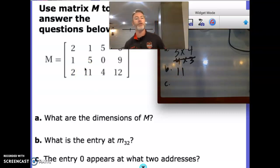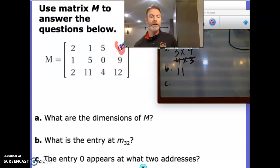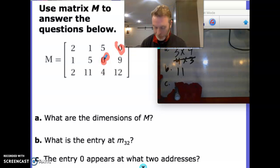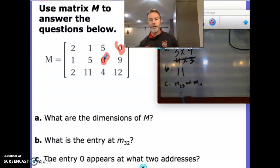And the last one, letter C, the entry zero appears at what two addresses. So, if I use my highlighter here, zero appears here and here. The two addresses, I'm going to use little M to stand for matrix M, big M. Zero appears at the second row. I'll use subscript here, third column, and little M, first row, fourth column. And the order you put these in doesn't matter. The order you put these numbers in, the one and four and two and three does matter.